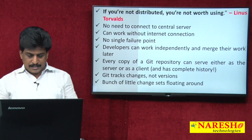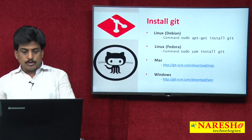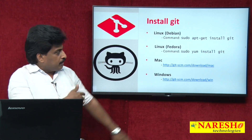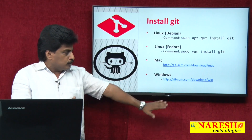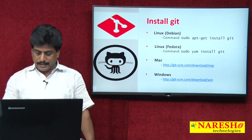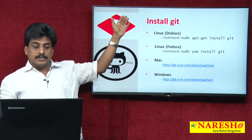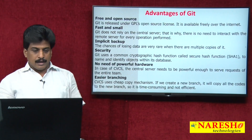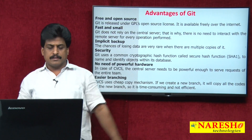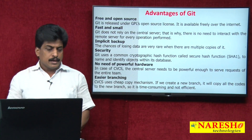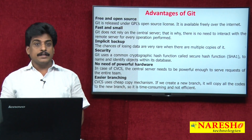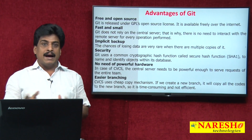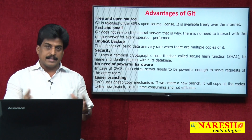To install Git, there is a website available where you can directly install it for Linux (Debian), Linux Fedora, Mac, and Windows — the URLs are provided. Note the symbol difference: this symbol is for GitHub and this one is for Git. Now let's look at Git's advantages: it is free and open source and is the default version control system in Unix environments — just type 'man git' to get all information.